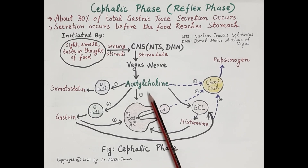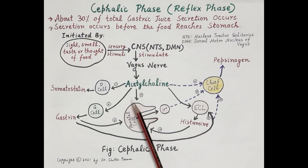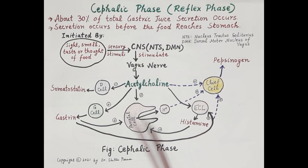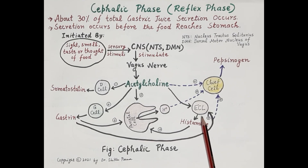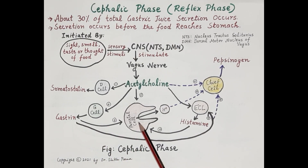Stimulation of the vagus nerve causes secretion of acetylcholine, which stimulates the release of gastric juice during the cephalic phase. Acetylcholine binds to muscarinic M3 receptors on the parietal cells, directly activating them to release gastric acid. Apart from this, acetylcholine also stimulates G cells to release gastrin, and stimulates enterochromaffin-like cells to produce histamine. These G cells and enterochromaffin-like cells are found in the gastric glands.